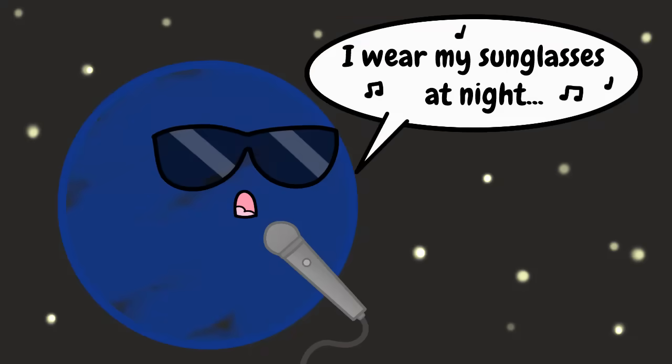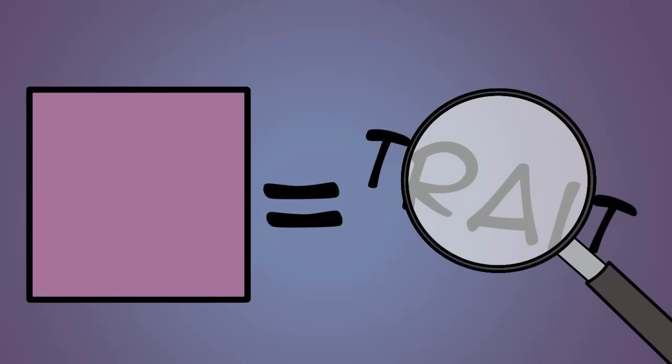You may wonder why some of these shapes are shaded. What does that mean? Well, the shaded shapes represent a trait that is being tracked in the pedigree.